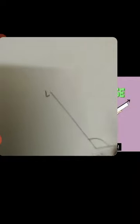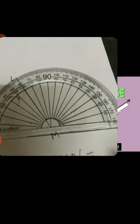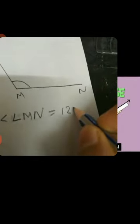Now see angle L, M, N. Again, keep the center point on the corner of the angle, and the bottom line should touch the line. You need to see the inner scale, starting from 0, 10, 20, and so on. It reached till 120. You need to read the inner scale here. So angle L, M, N is equal to 120 degree.